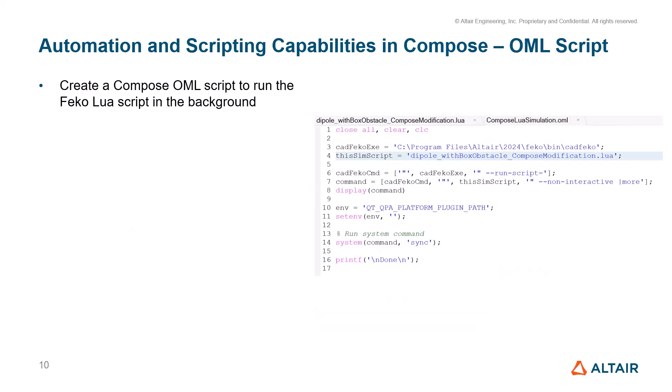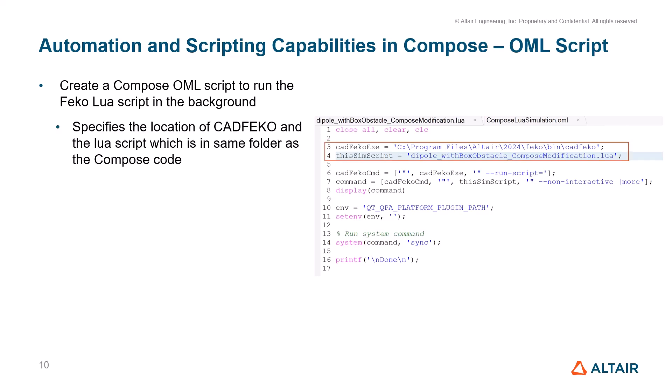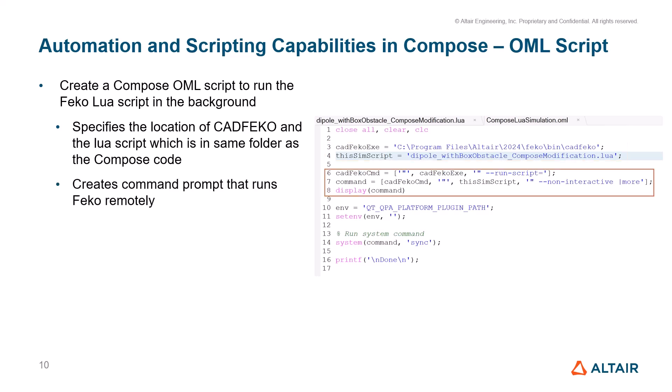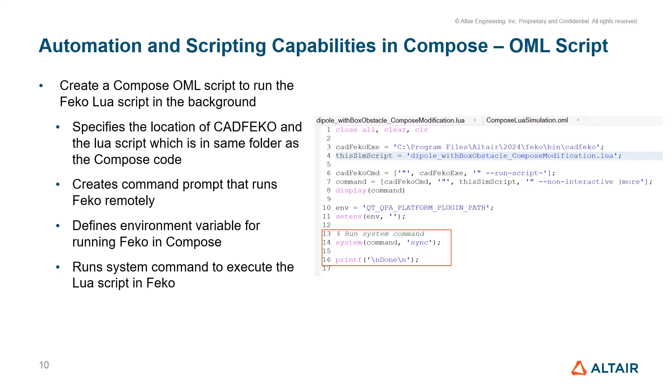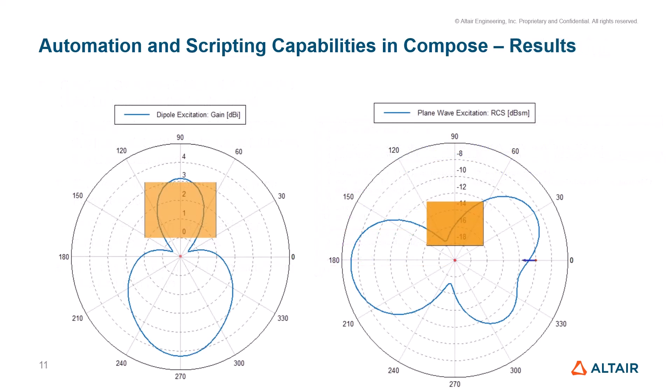In Compose, you need to create an OML script to run the FECO LUA script. The first line specifies the file path to the CAD FECO executable, and the second defines the location of the modified LUA script. The next portion defines the command prompt that will run FECO remotely for the LUA script. You must define the environment variable for Compose to run FECO in the background, then use the system command to execute the LUA script in FECO.